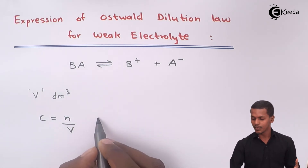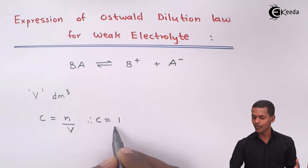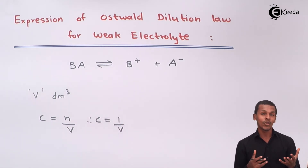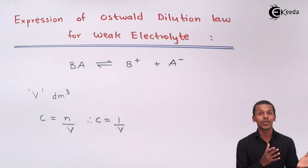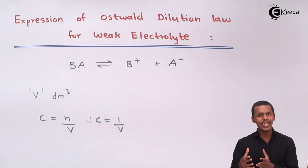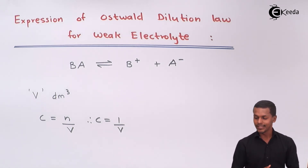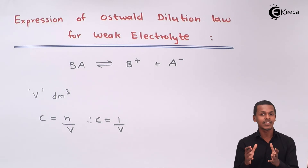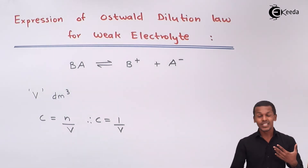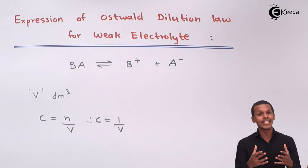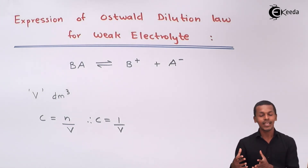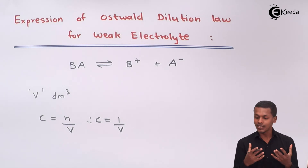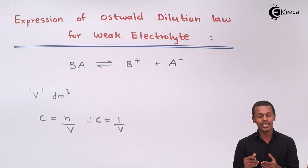So the concentration C equals 1/V, where V is the volume of the solution containing one mole of the electrolyte. This electrolyte will undergo dissociation to form an equilibrium between the electrolyte and the produced ions. This is what we will use to give the expression for the Oswald Dilution Law for the weak electrolyte.